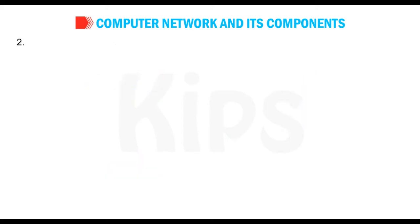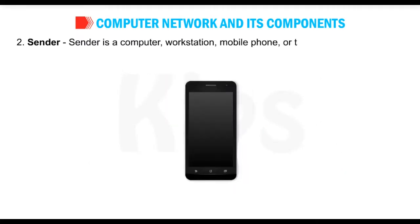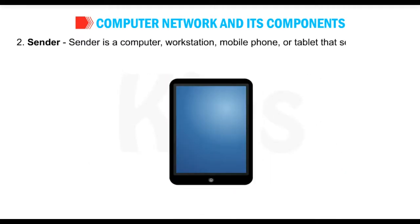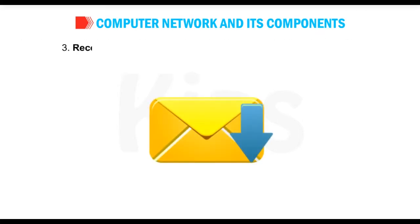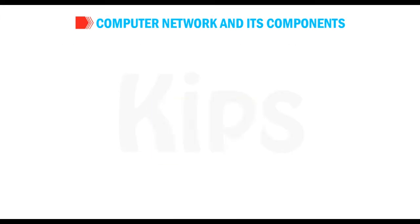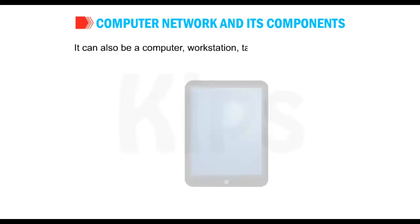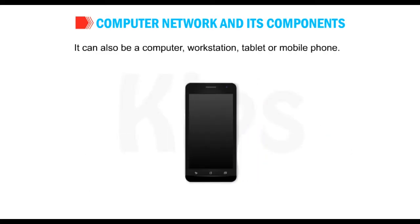Number 2: Sender — a sender is a computer, workstation, mobile phone or tablet that sends the data message through a web browser. Number 3: Receiver — a receiver is a device that receives the data messages. It can also be a computer, workstation, tablet or mobile phone.